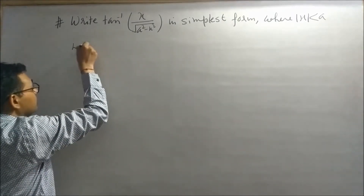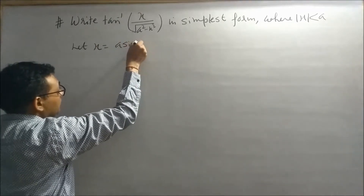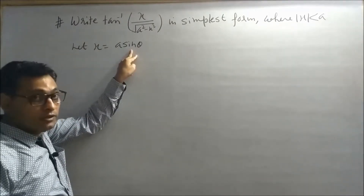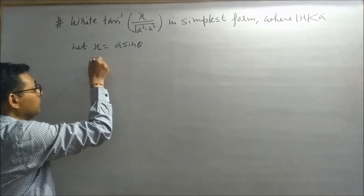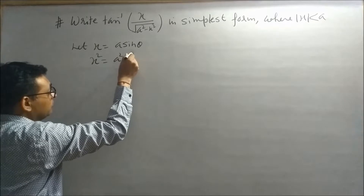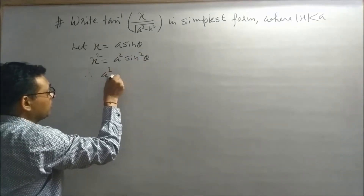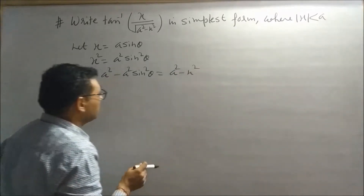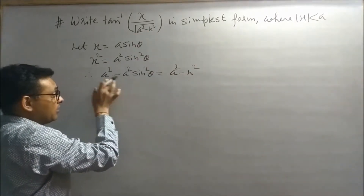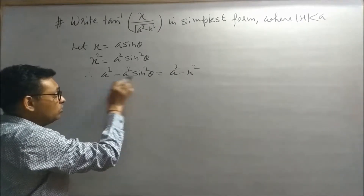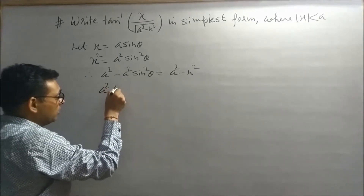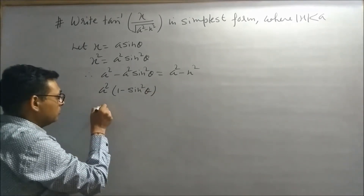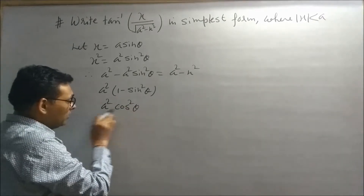Let x = a sin θ. When x = a sin θ, then x² = a² sin² θ. So a² - x² becomes a² - a² sin² θ. Taking a² common, we get a²(1 - sin² θ), which equals a² cos² θ.